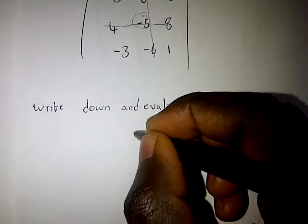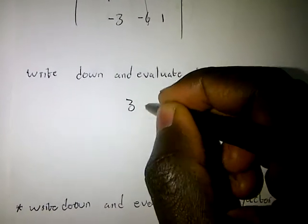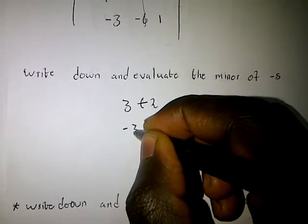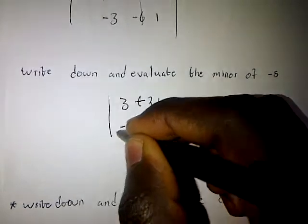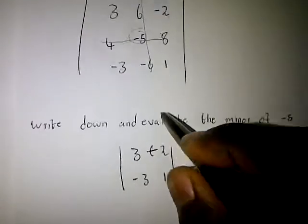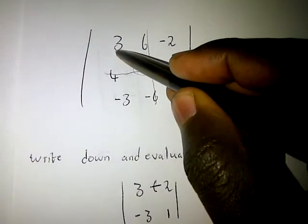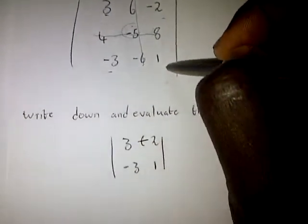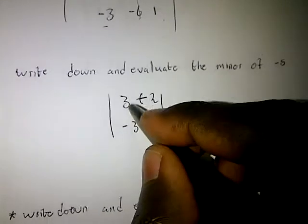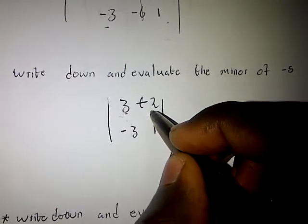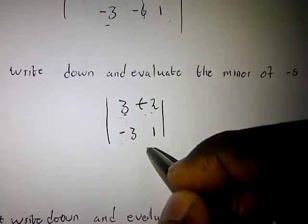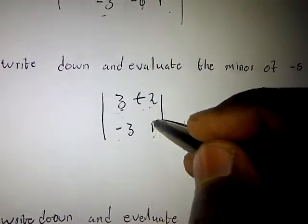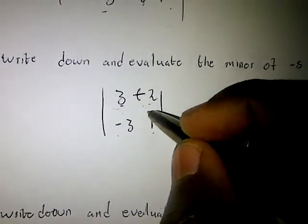So that gives us the 2x2 matrix: 3 and negative 2 in the first row, and negative 3 and 1 in the second row. This is the minor of negative 5 — the matrix consisting of 3, negative 2, negative 3, and 1.